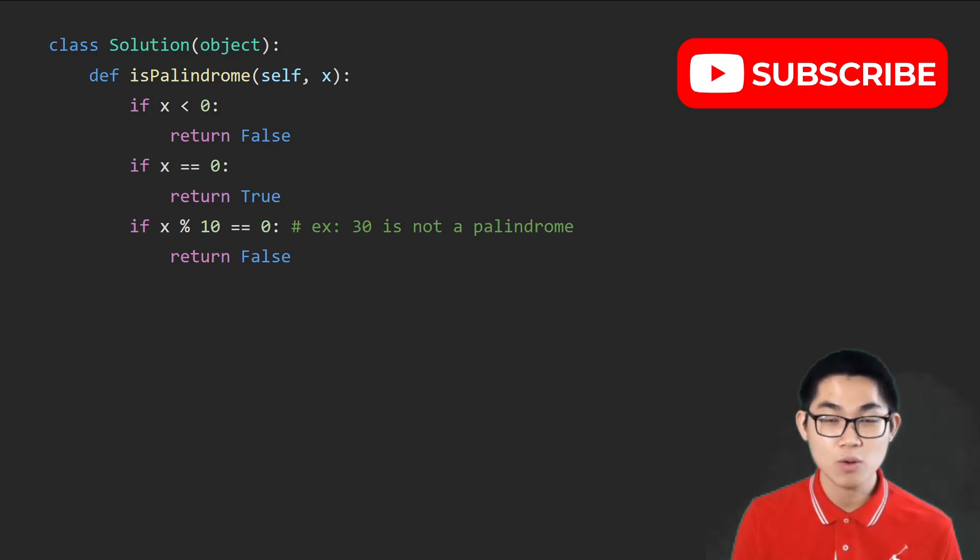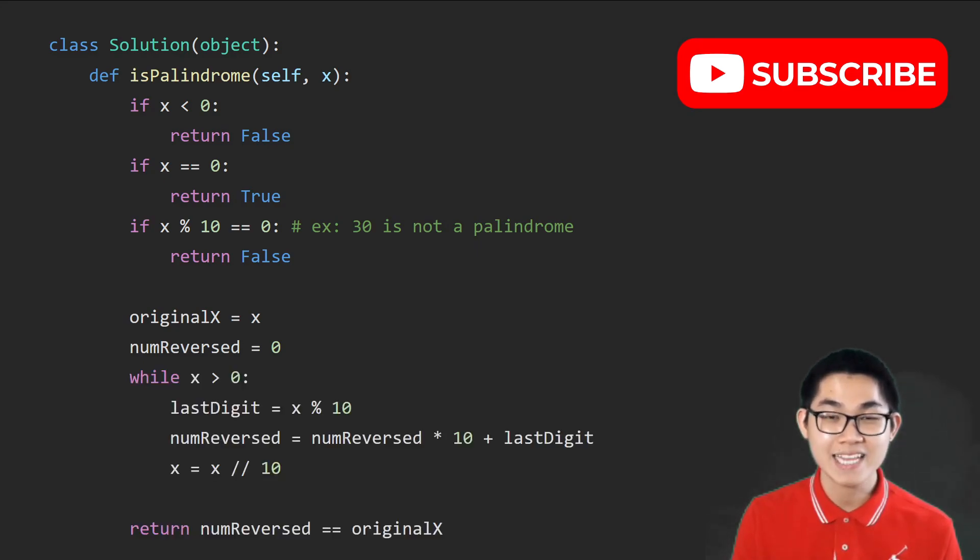So when x is positive, and x mod 10, which is getting the last digit, and the last digit is 0, then we also know it's not a palindrome number. We also copy x into original x, and we make num reverse equal to 0. Then we just paste in the while loop. And at the end, we compare the original x to num reversed.